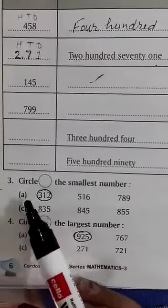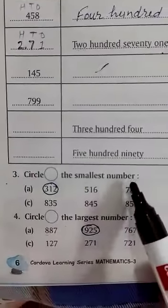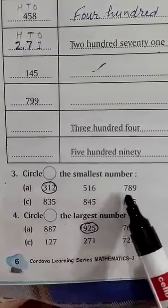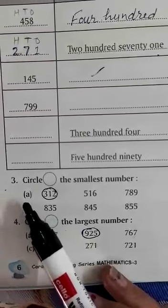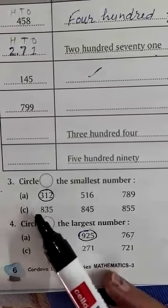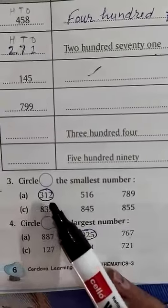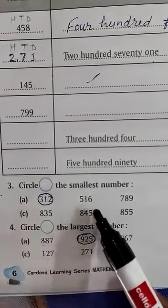Question 3: Circle the smallest number. You have to circle the smallest number. A, I am doing for you. Read this number: 312, 516, 789.